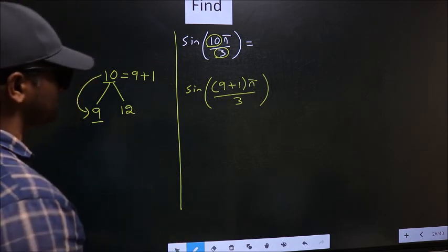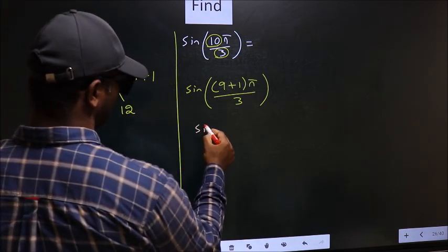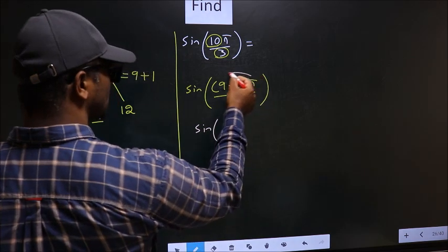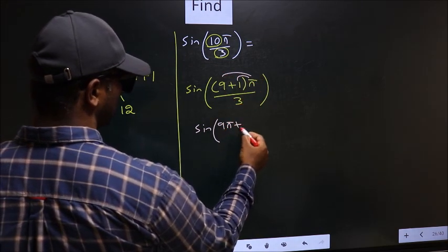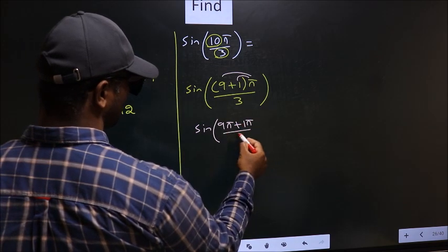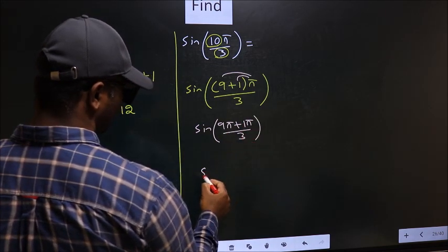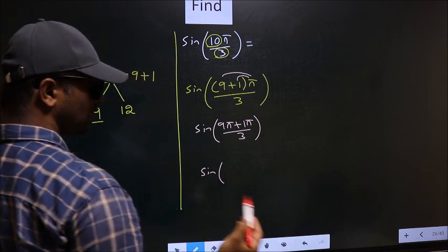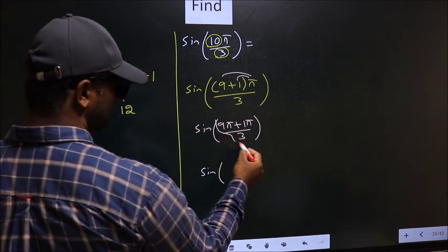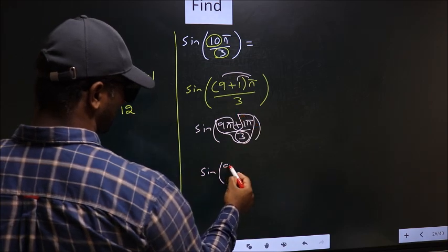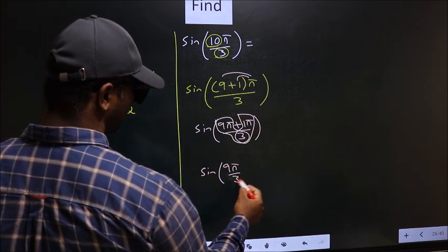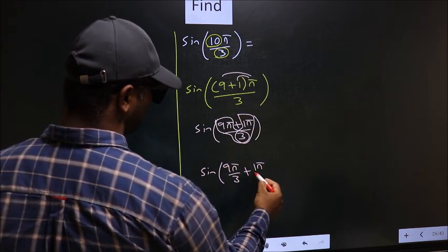Next, sin of—now you should open up the brackets. So you get 9π plus 1π by 3. Now you should split the denominator in this way. So you get 9π by 3 plus 1π by 3.